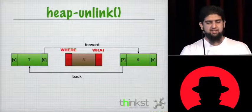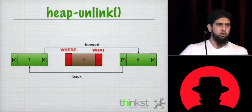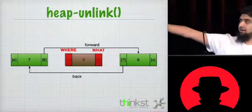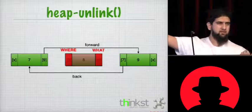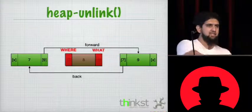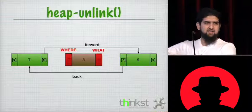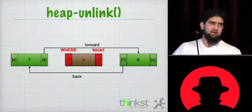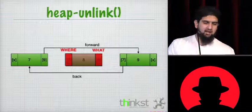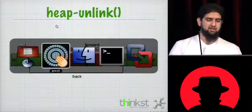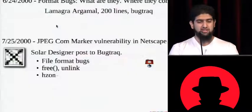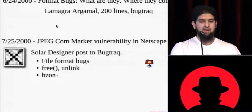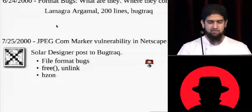What Solar essentially documented was that when unlink is called, so if you wanted to remove 8 from this list, essentially what you would have to do is go to the previous node, go to 7 and point it to 9, and you're going to go to 9 and point it to 7. You're basically removing that node from the list. But what you should also see is this becomes a form of a write what where. If you can say, in place of my previous pointer, write this at EIP and write this value, essentially what it's going to do is go to that location and write that value. Suddenly heap overflows that were until this point considered almost not exploitable suddenly become trivially exploitable and it's still a bug class that lives today.